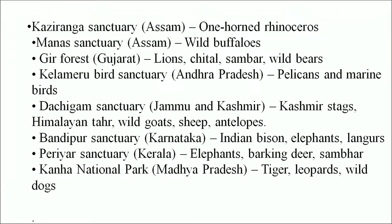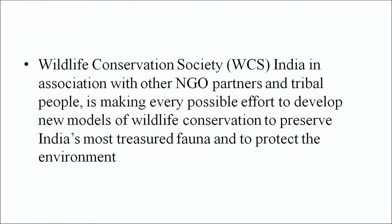Some important examples: Kaziranga Sanctuary in Assam is famous for the one-horned rhinoceros. Manas Sanctuary in Assam has wildlife buffalo. Gir Forest in Gujarat has lion, cheetal, sambhar and wild bear. Keoladeo Bird Sanctuary in Andhra Pradesh is famous for pelicans and marine birds. Dachigam Sanctuary, Jammu and Kashmir, is home to Kashmir stags, Himalayan tahr, wild goat, sheep and antelope. Kanha National Park has tiger, leopard, wild dog and others. The Wildlife Conservation Society in India, in association with NGO partners and tribal people, is making every effort to develop new models of wildlife conservation to preserve India's most treasured fauna.